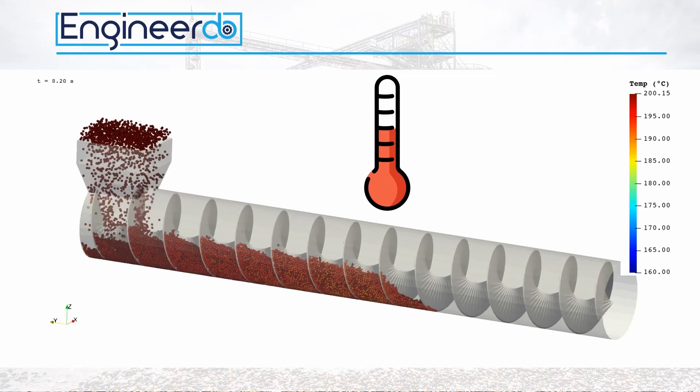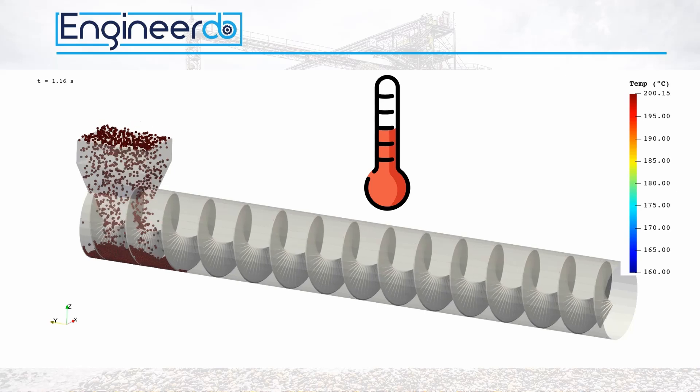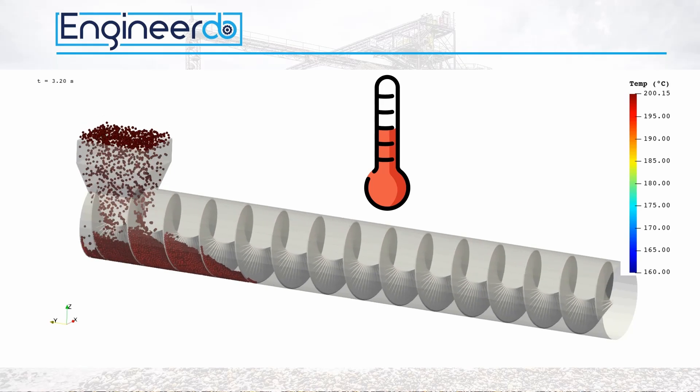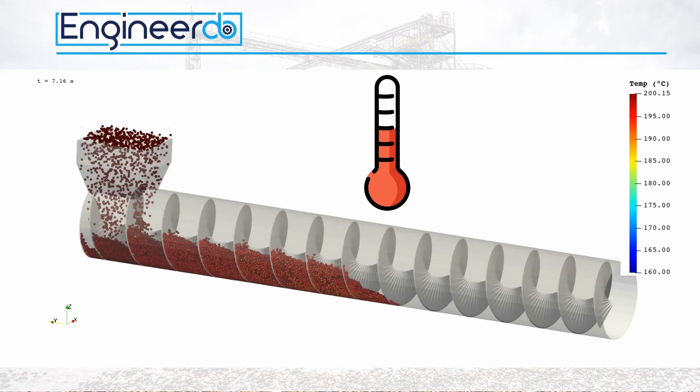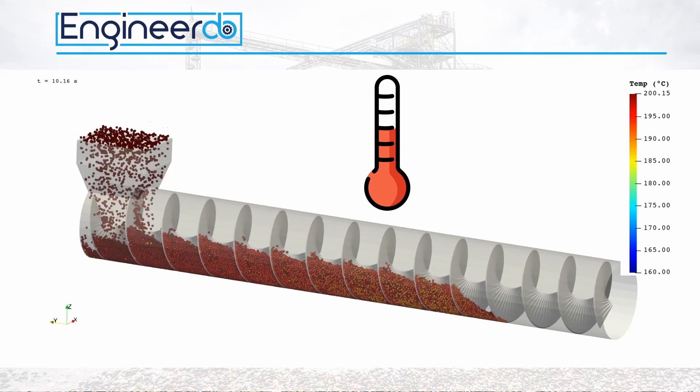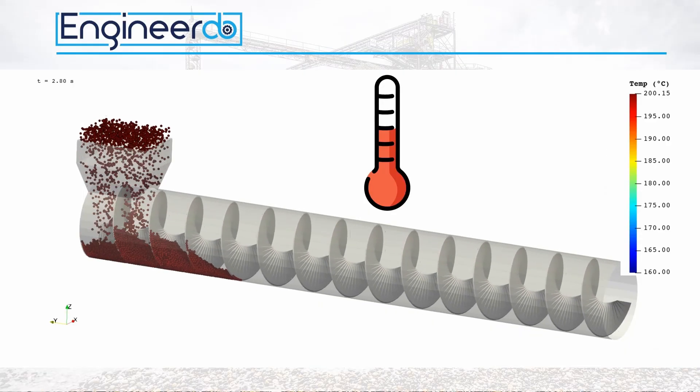The screw moves the particles along a cold wall which takes the heat out of the bulk material. Hence, the heat loss is depending on the conductivity of the particles and the motion of the particles within the machine. For example, in a very well-mixed system the process takes less time as in a motionless system.